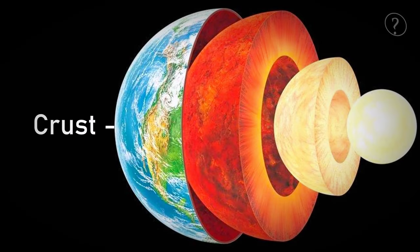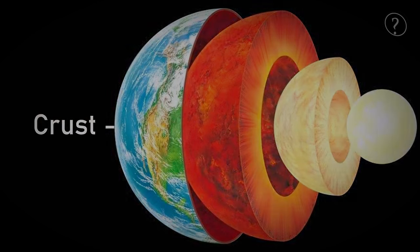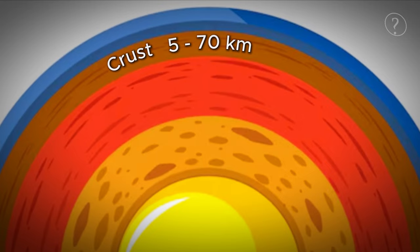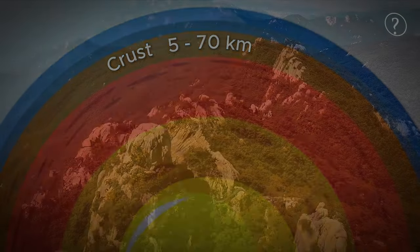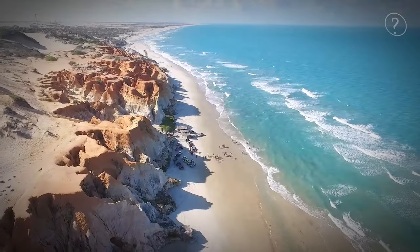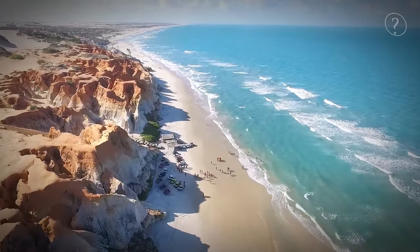This is the layer we call home, the crust. It's where we walk, build cities, and live our lives. The crust is surprisingly thin compared to the other layers, averaging just 5 to 70 kilometers deep.